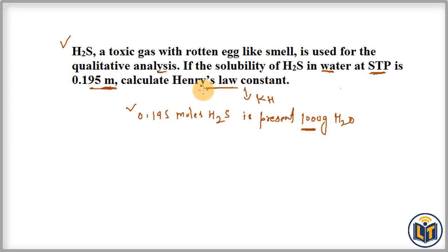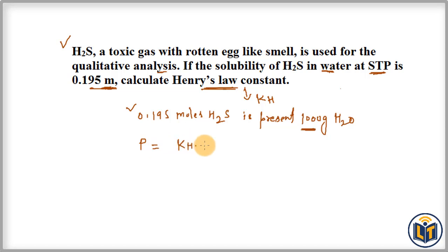If we look at Henry's law formula, Henry's law states that the vapor pressure of a component in the solution is directly proportional to the mole fraction of solute. The formula is P = KH × X, where P is vapor pressure, KH is Henry's law constant, and X is the mole fraction of solute in the solution.